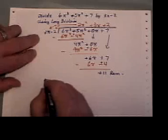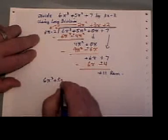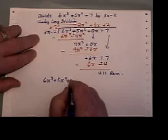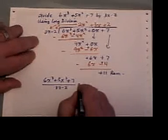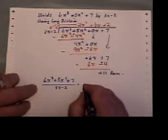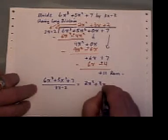So my final answer is if I take this guy and divide him by 3x minus 2, I get a quotient, or an answer, of 2x squared plus 3x plus 2.